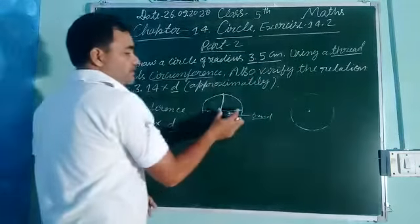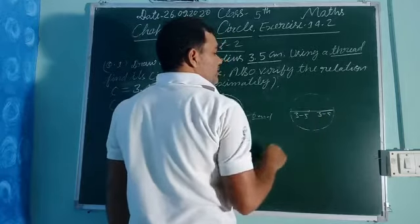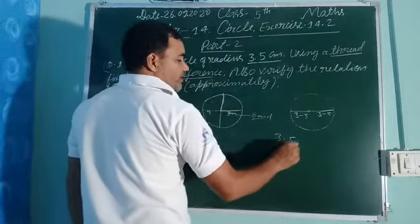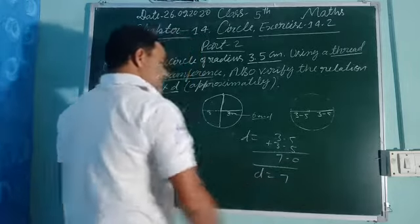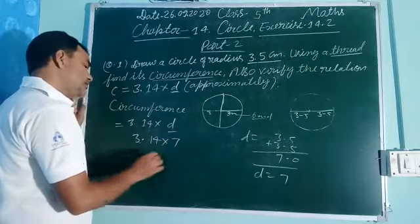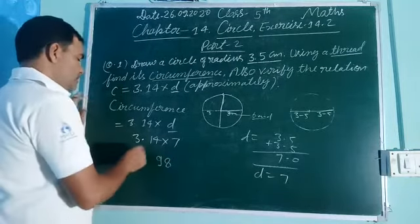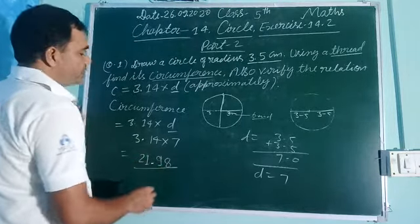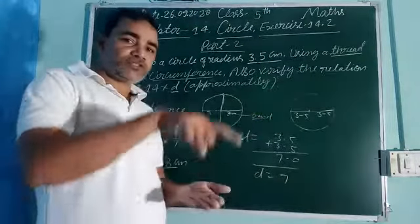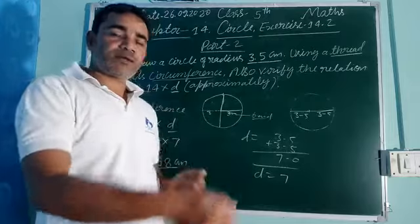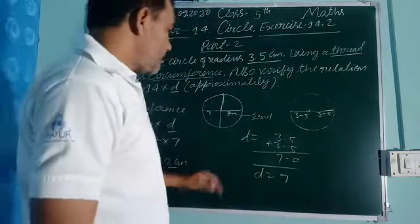Thread से नापने के बाद उसको अपने formula से verify करिए। Formula है: C = 3.14 × D। Radius 3.5 cm है, तो diameter = 3.5 + 3.5 = 7 cm। तो C = 3.14 × 7 = 21.98 cm। यह आपका answer होगा। Circle बनाने के बाद thread से जो measurement आए, scale से नापिए — वही 21.98 cm आना चाहिए। अगर यह आ गया तो आपका verify हो गया।